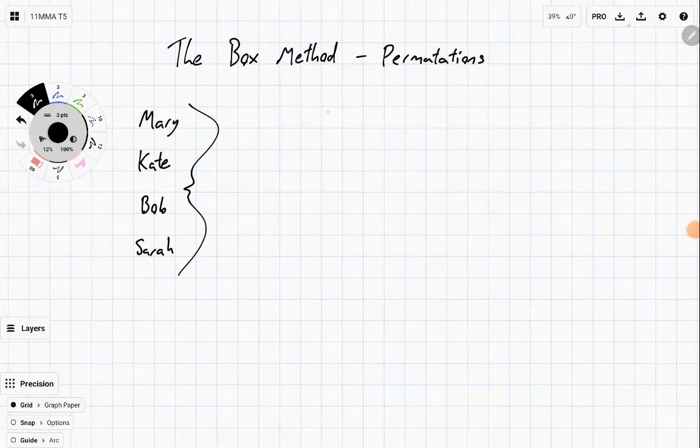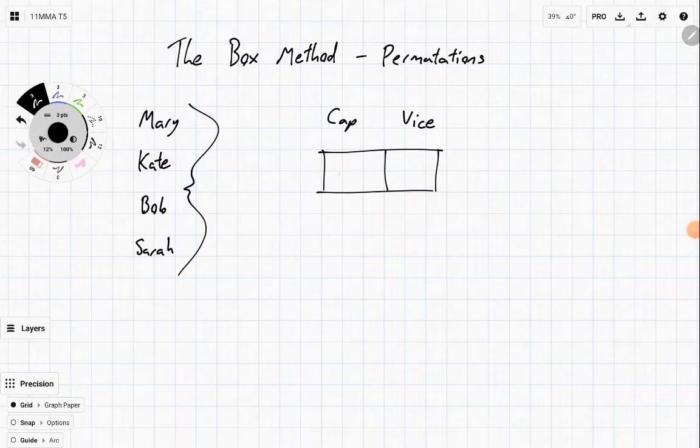So imagine we have the same thing. We want the captain and we want the vice. We have two positions to fill in. So we draw a box with two spaces in it. For the captaincy we have four different options. So there's four different people who could be the captain.